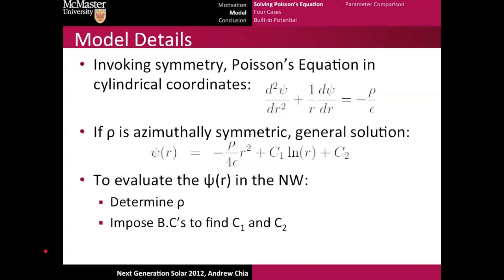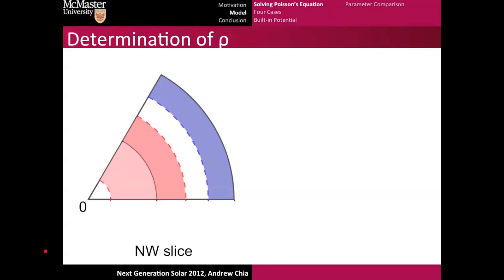To fully express this function, all we need is rho, which is the charge density, and we have to impose some boundary conditions. Let's look at rho. If we looked at a nanowire from the top down and cut out a little pie slice, we'd get a schematic which looks like this, where we have a core and a shell. This red shaded region shows the space-charge region due to the PN junction, and the blue shaded region shows the space-charge region associated with the surface depletion. Clearly, in the white regions is where the quasi-neutral region is and rho equals zero.